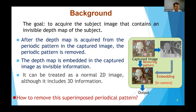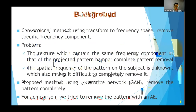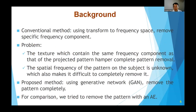In this study, we focus on the technique that aims to remove this superimposed periodical pattern from the captured image. A conventional method uses a transform to frequency space, like Fourier transform, to remove a specific frequency component. However, textures which contain the same frequency component as that of the projected pattern hinder complete pattern removal. Since the spatial frequency of the pattern on the subject depends on the depth of the subject, it is unknown, and this also makes it difficult to completely remove it.